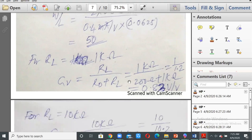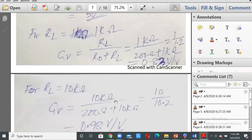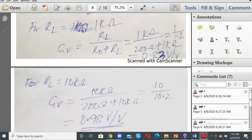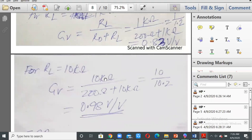For RL equal to 1 kilohm, gv will be RL divided by R naught plus RL: 1 kilohm divided by 200 plus 1 kilohm equal to 1 by 1.2, that is equal to 0.83 volt per volt. For RL equal to 10 kilohms, gv will be 10 kilohms divided by 200 plus 10 kilohms, that is 10 by 10.2.